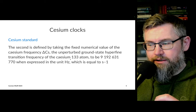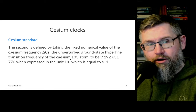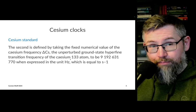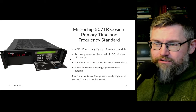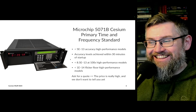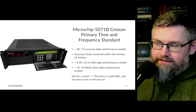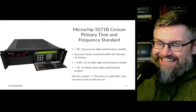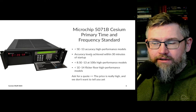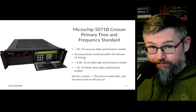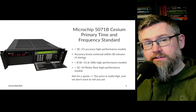Somehow we have to extract that frequency, and that's where hardware comes in. As soon as you add hardware, it's hard to maintain an unperturbed system. You can buy a cesium standard clock — they may look like this one from Microchip. Looking at the specification: less than 5×10⁻¹³ accuracy. But the most interesting thing is that accuracy is only achieved within 30 minutes of startup, meaning you press power and it takes half an hour before the frequency is exact.